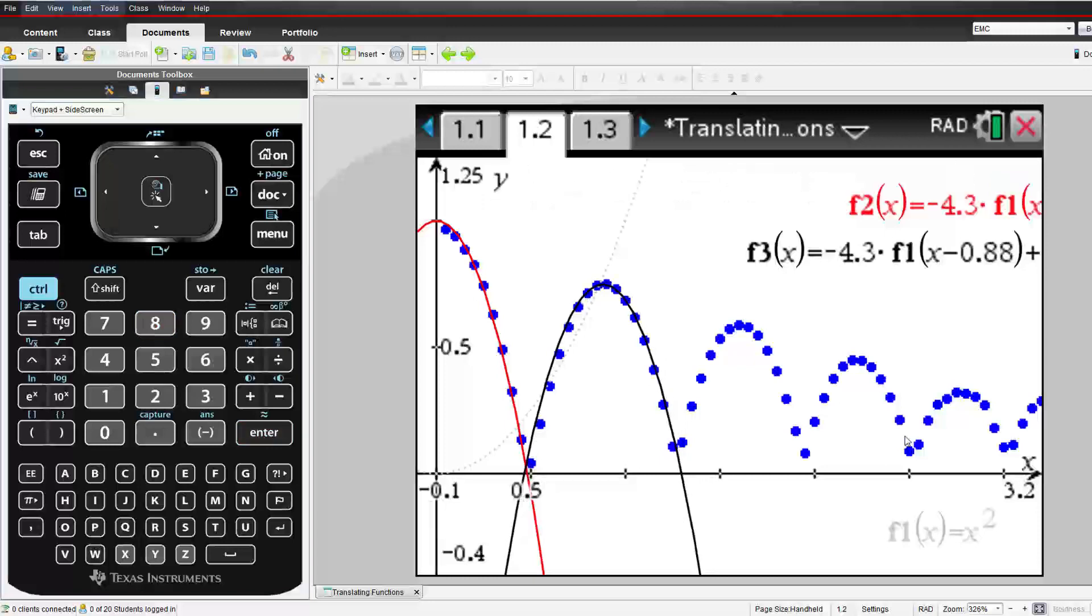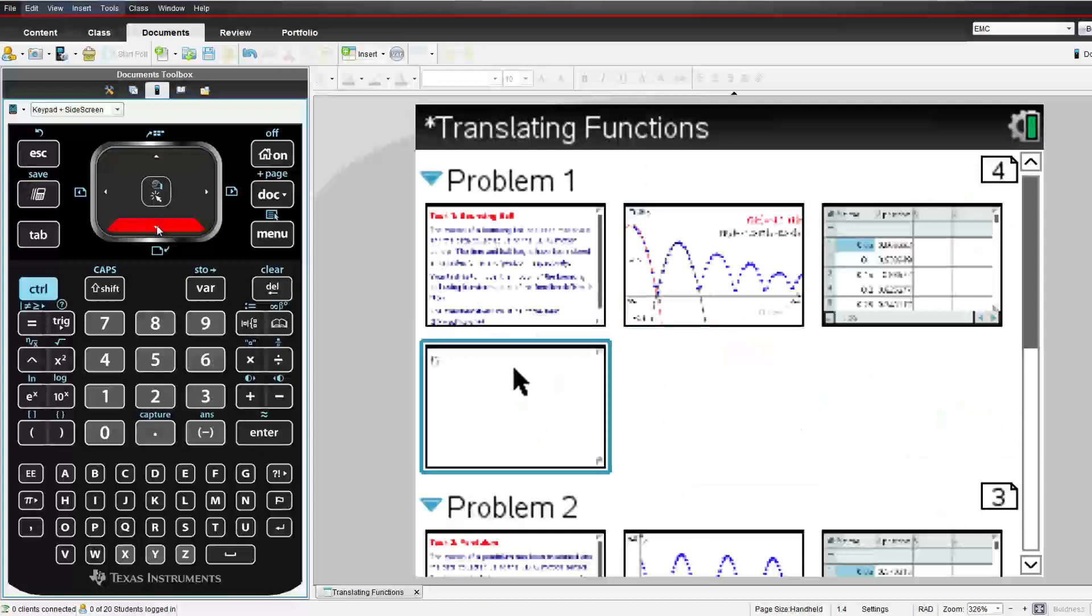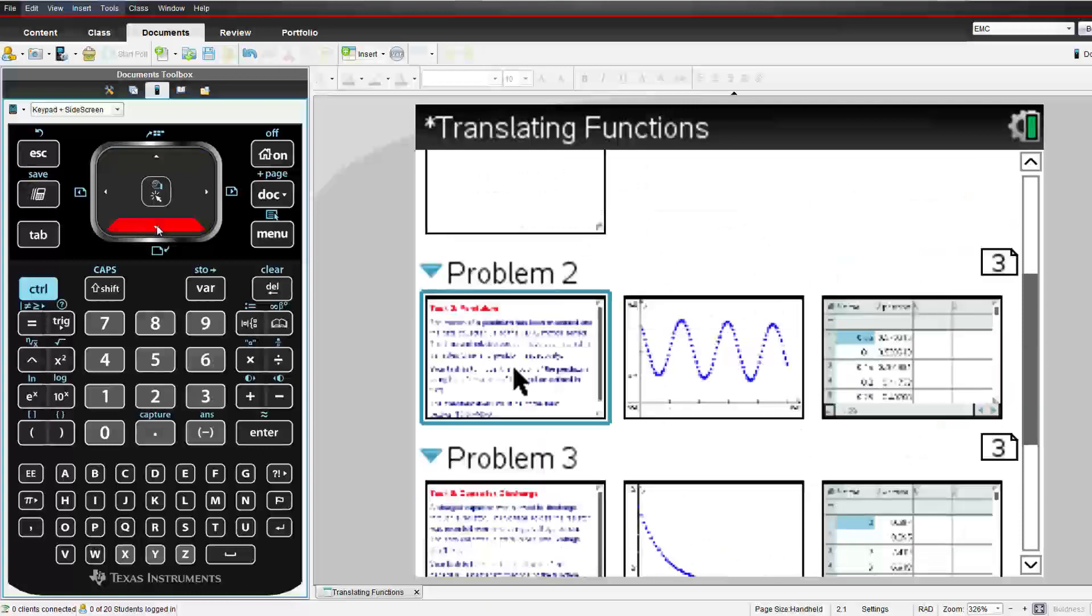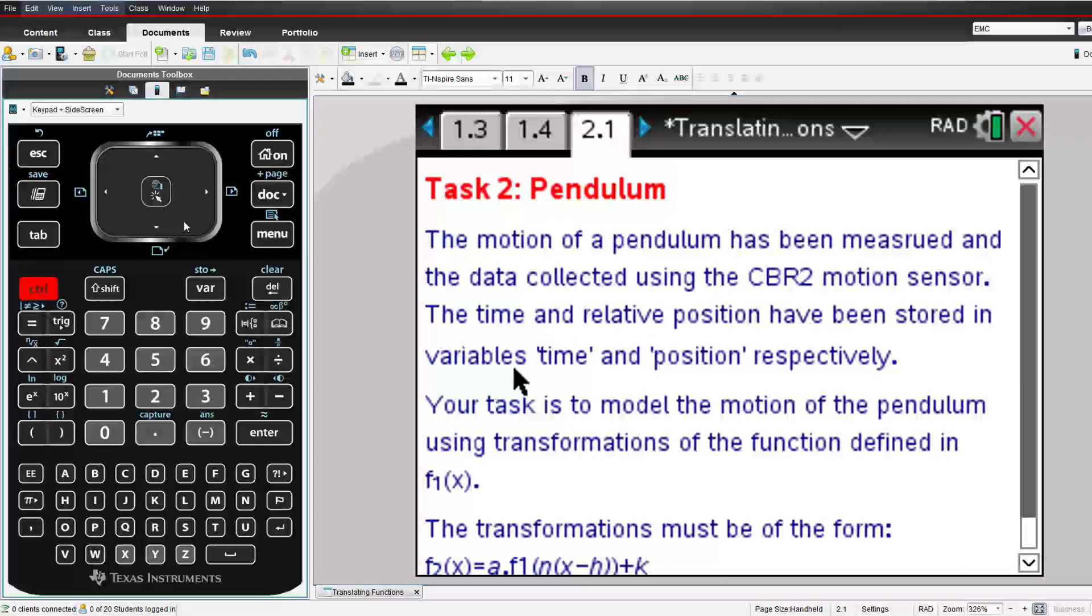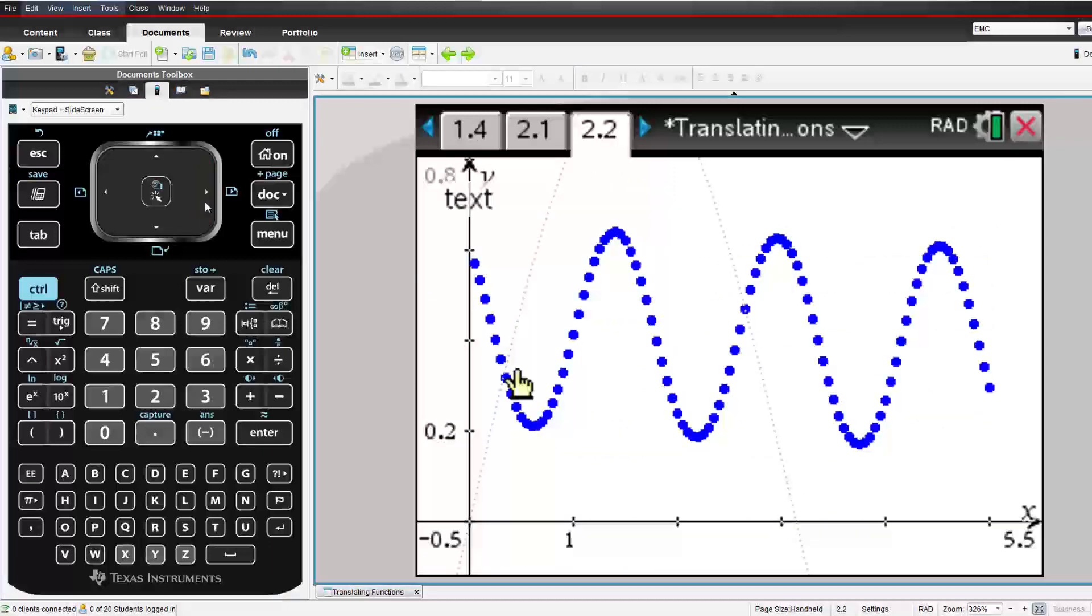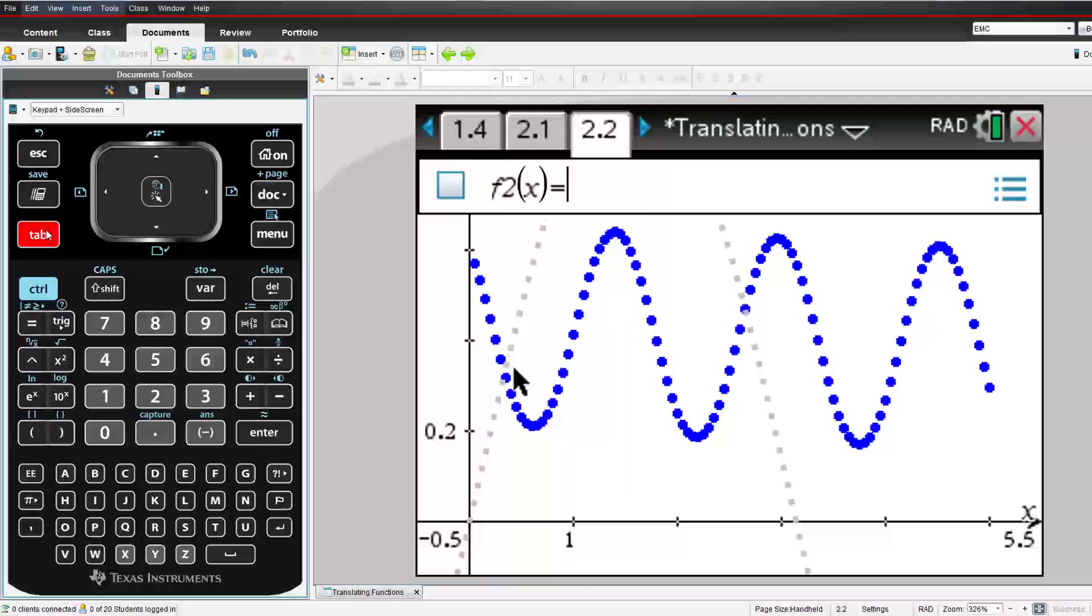Once the students have got all the equations to model the ball bounce, they move on to the next task, stored in problem 2. In problem 2, there's data for the motion of the pendulum, again collected using the CBR. Now we see that the function this time, or the data at least, seems to be periodic, best modelled by a trig function.